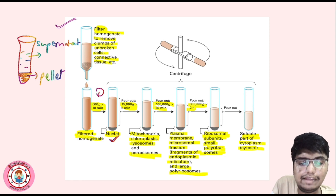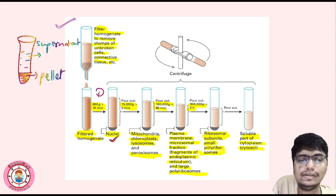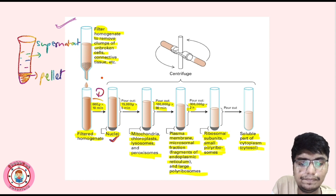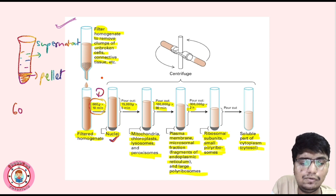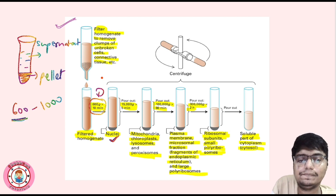Note that 600 gravity — the gravity, time, and speed can be varied in questions. For example, 600g at 10 minutes: they can give you anything between 600 to 1000. Don't only consider 600; consider 600 to 1000.